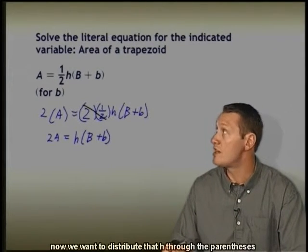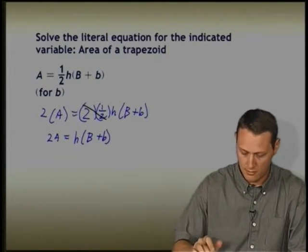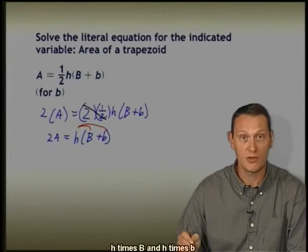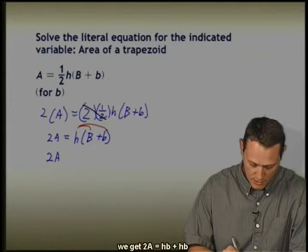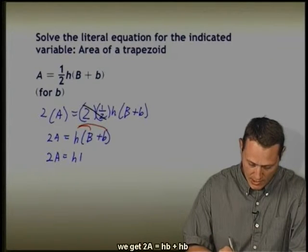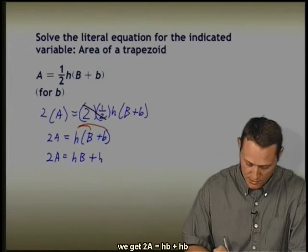Now we want to distribute that h through the parentheses: h times capital B and h times small b. We get 2A equals hB plus h times small b.